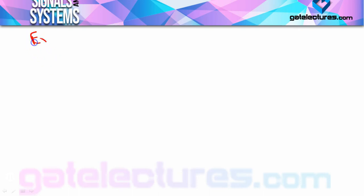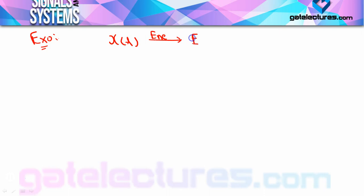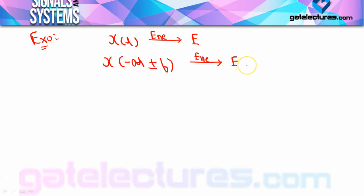The first concept: a signal x(t) is given to you, and the energy of x(t) is given as E. You are asked — what will be the energy of x(-at ± b)? Let's call this E1. The concept is: when you perform scaling or shifting on time variable t of signal x(t), how does the energy change?